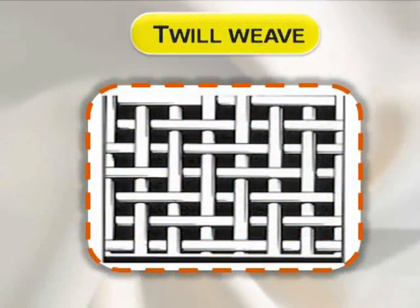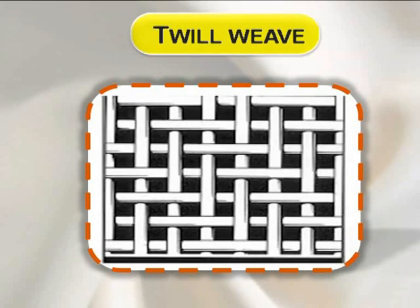Twill weave. The twill weave structure requires a minimum of three warp and three weft. This weave is distinguished by diagonal lines.